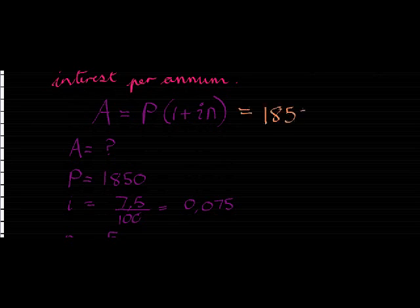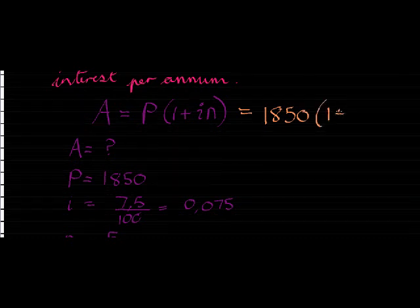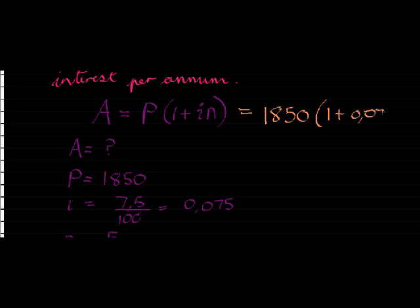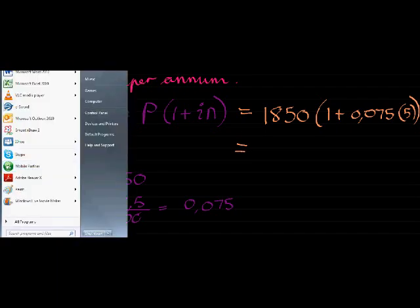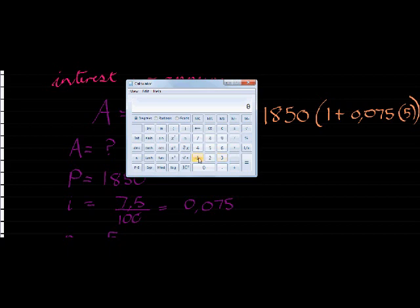So we have a thousand eight hundred and fifty, that is one plus zero comma zero seven five multiplied by five. Let's use our calculator. Type one eight fifty, then multiply, and now I put in brackets what is in brackets: one plus point zero seven five times five, and I close my brackets. Safest way to type it exactly as you find it in your equation. And there we go, two thousand five hundred and forty-three comma seventy-five.